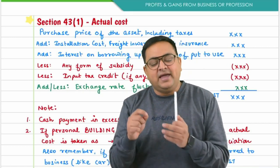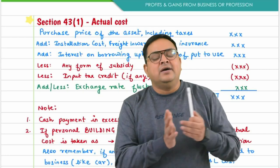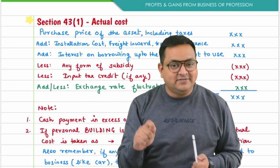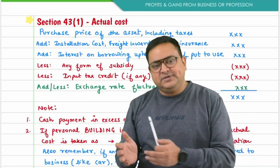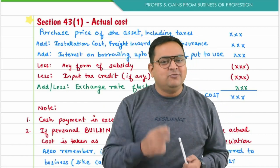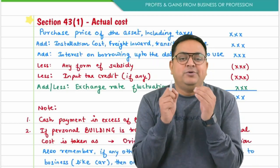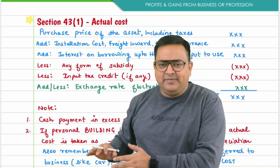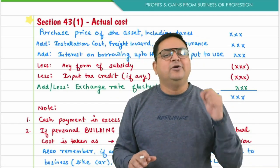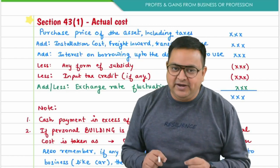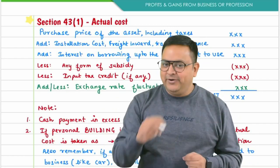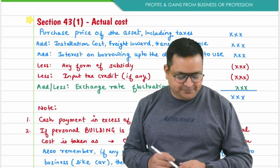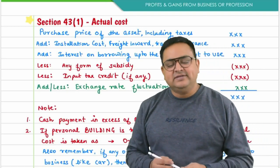MSME is quite a special case under 43B. For remaining expenses, payment should be made up to the due date of ROI, but for MSME it should be made as per the MSME Act. If there is no written agreement, payment should be made within 15 days. If made within 15 days, we allow it on accrual basis; if not, we allow it only when actually paid. Now let's move to Section 43(1) — Actual Cost.